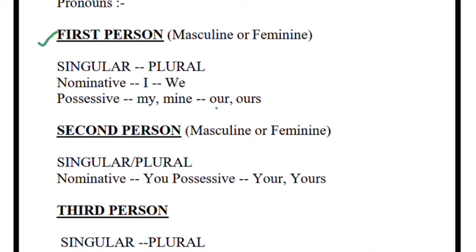So we will remember that in case of a personal pronoun we have three persons. First person — write down in your copies — 'I' and 'we' are the only two types used in case of first person. When it is singular it is only 'I'; when it is plural it is only 'we.' In case of a second person, the word used in case of the personal pronoun is only and only 'you.' You is used in both singular as well as plural.